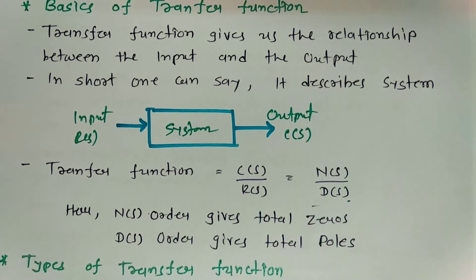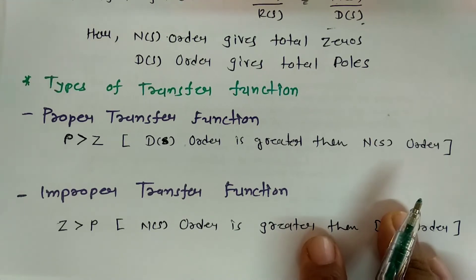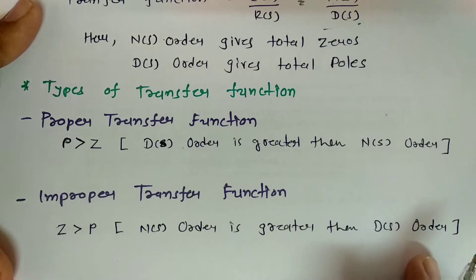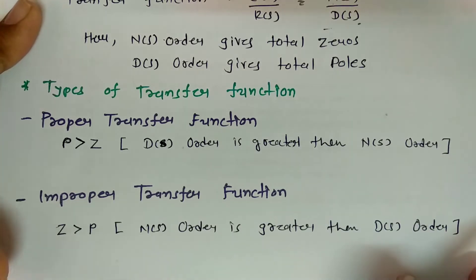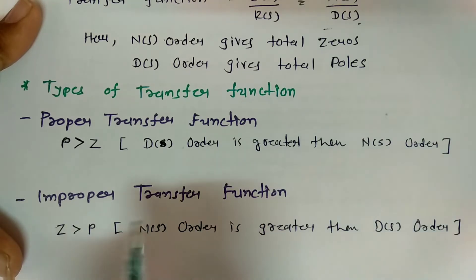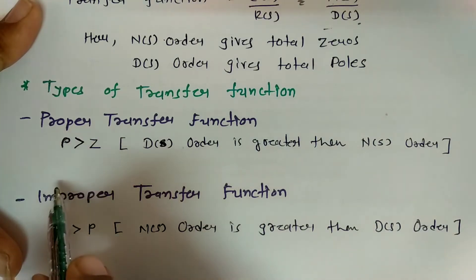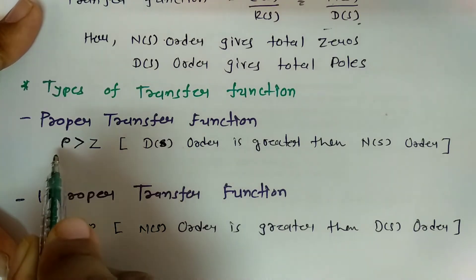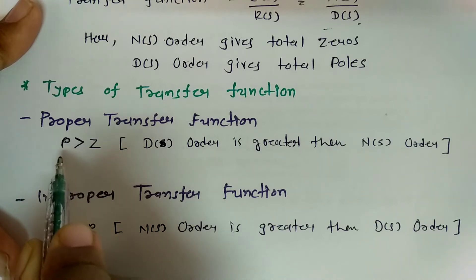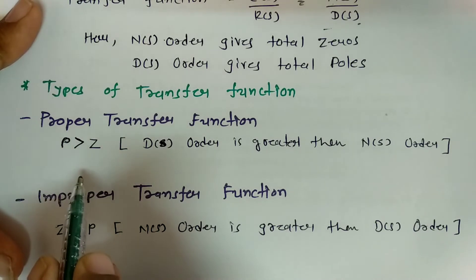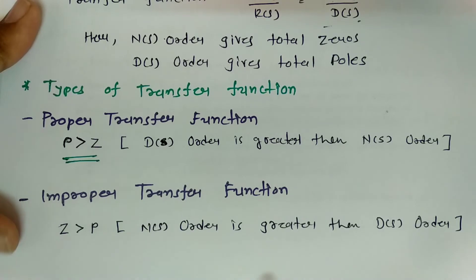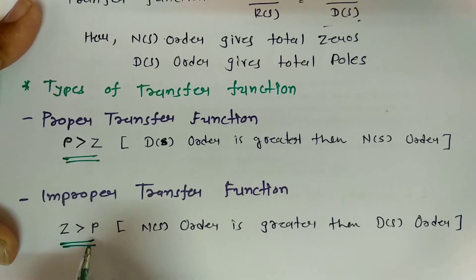When we talk about different types of transfer functions, one can classify transfer functions into two parts: proper transfer function and improper transfer function. A proper transfer function means a transfer function which has more poles compared to zeros — that is, the order of the denominator polynomial is greater than the order of the numerator polynomial.